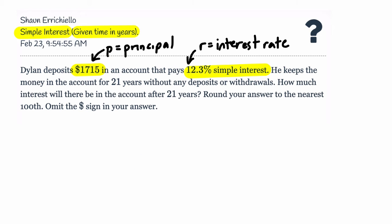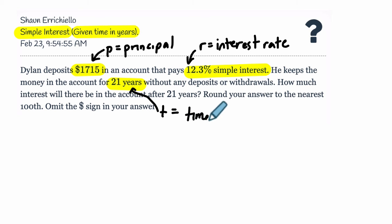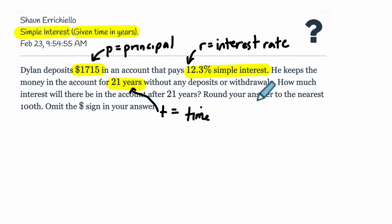He's keeping the money in the account for how long? For 21 years — quite a long while. This will be our T value, which is T or time. How much interest will there be in the account after those 21 years? There are no deposits or withdrawals, so this amount of money is not changing. Round your answer to the nearest hundredth and omit the dollar sign in the answer.